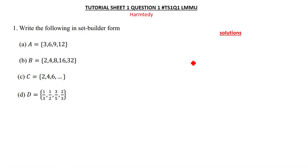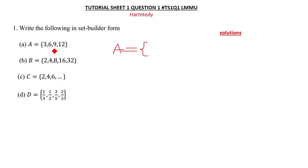Our set is A, so we say A is equal to, and we open the brackets. You can see that we're moving in multiples of three — we start with 3, 6, 9, 12. So instead of just writing x, I'll say 3x, so our formula is 3x, such that...